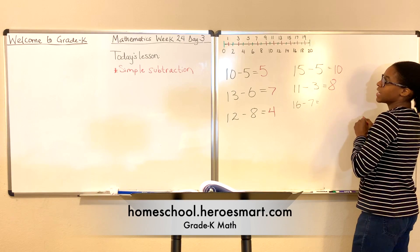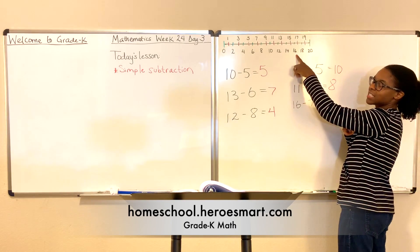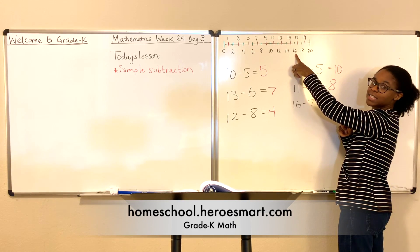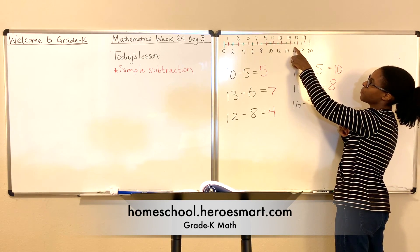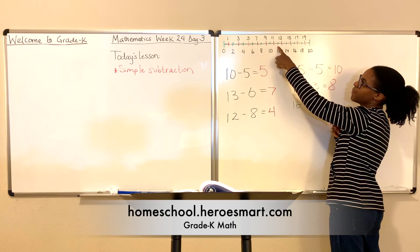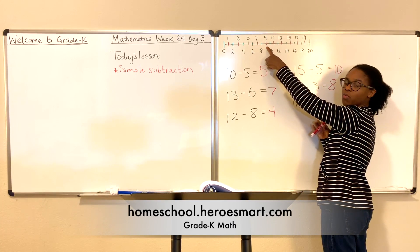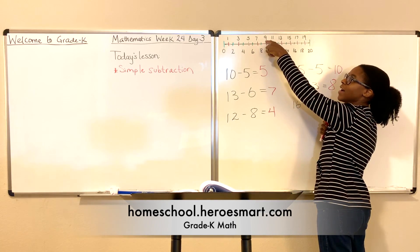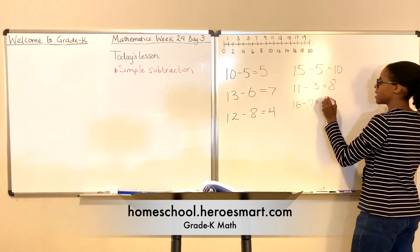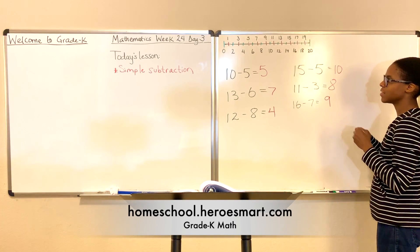And finally, we have 16 minus 7. So we're going to find 16 on the number line, and then we're going to subtract 7. Here we go: 1, 2, 3, 4, 5, 6, 7. What number does this line land on? It lands on 9. Good. So 16 minus 7 is 9.